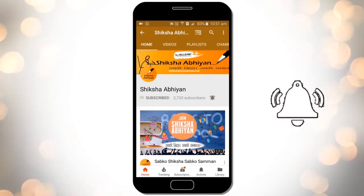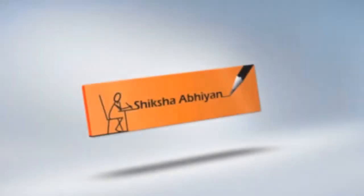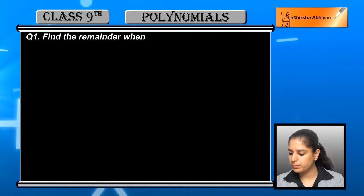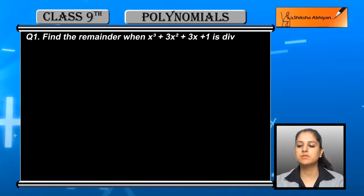Exercise 2.3, question number 1: Find the remainder when x³ + 3x² + 3x + 1 is divided by a linear polynomial.